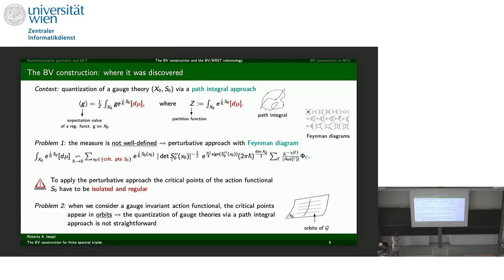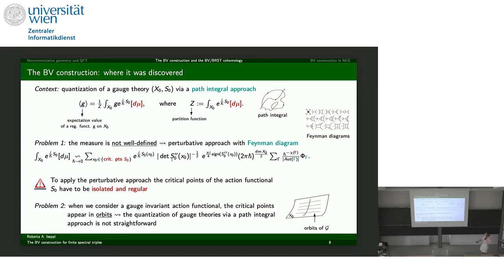This perturbative approach works when critical points of the action functional are isolated and regular. A second problem appears in gauge theories: critical points appear in orbits, so they are clearly not isolated. The question is how to solve this problem.